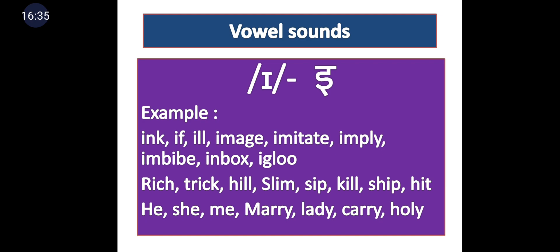Short E (ɪ) also appears medially in words like: rich, trick, hill, slim, sip, kill, ship, hit. You cannot make this vowel lengthy — if you extend the 'i' in 'rich,' it becomes 'reach,' completely changing the meaning. Similarly, 'hill' with a short I stays 'hill,' but stretched it becomes 'heal.' Short E also appears finally in: he, she, me, marry, Mary, lady, carry, holy — so it appears initially, medially, and finally.